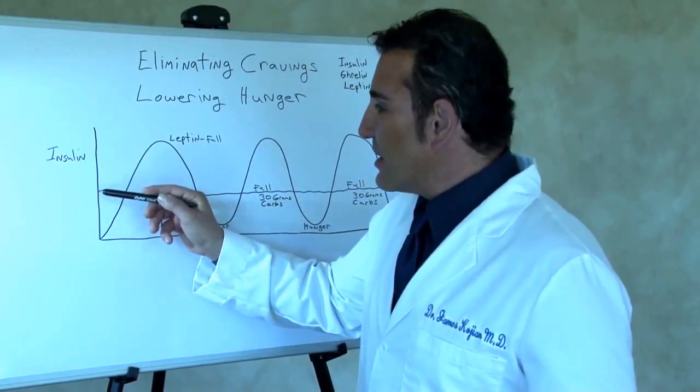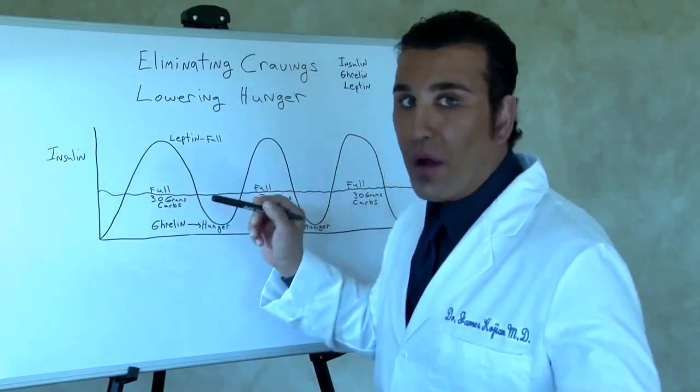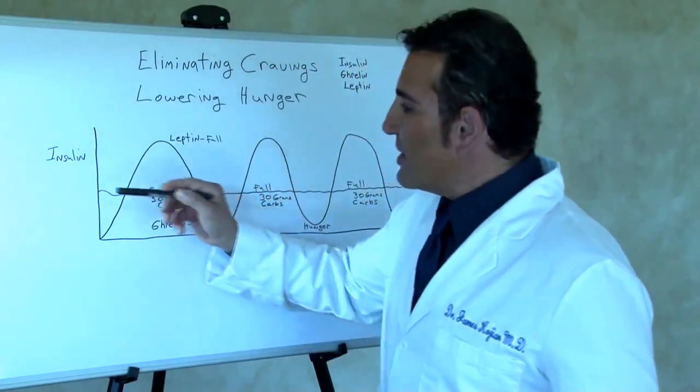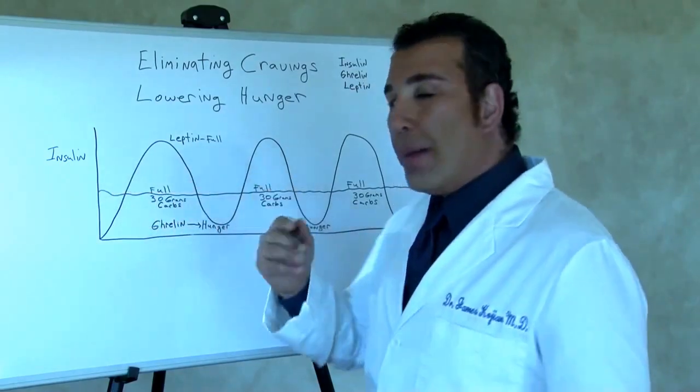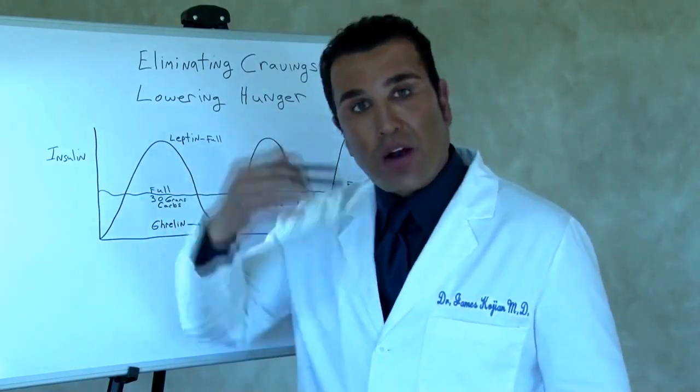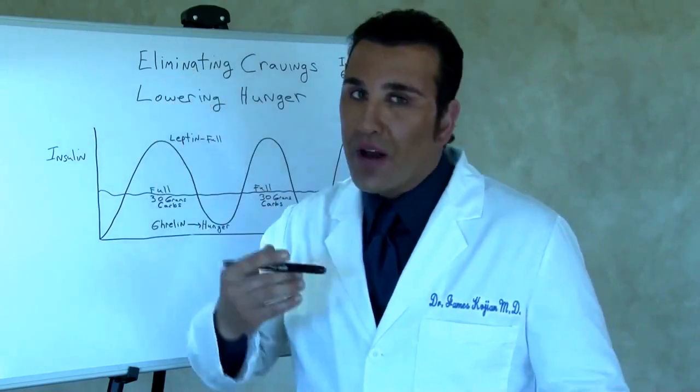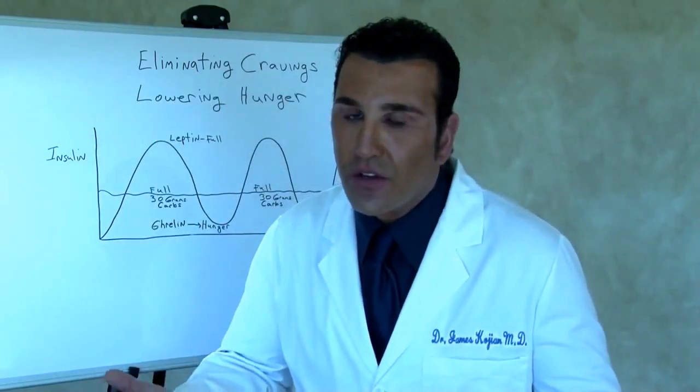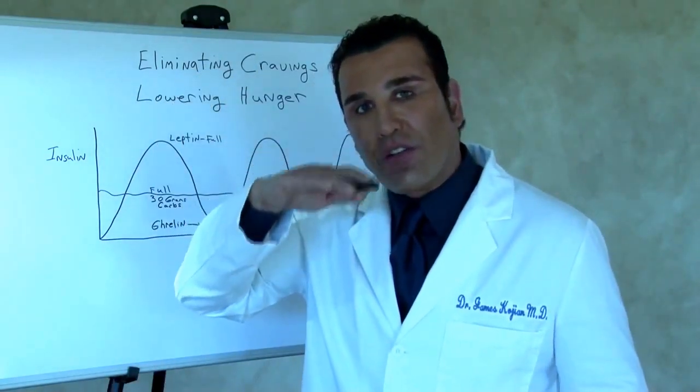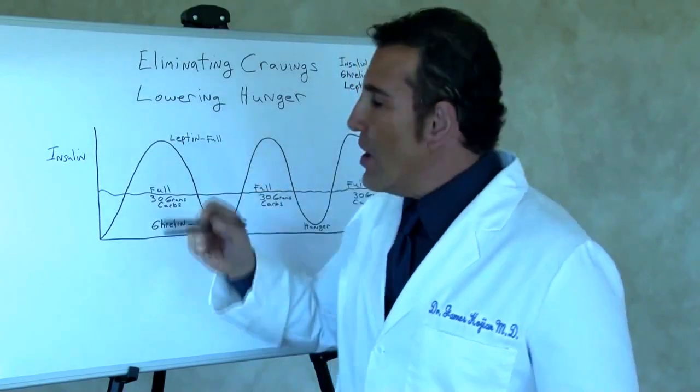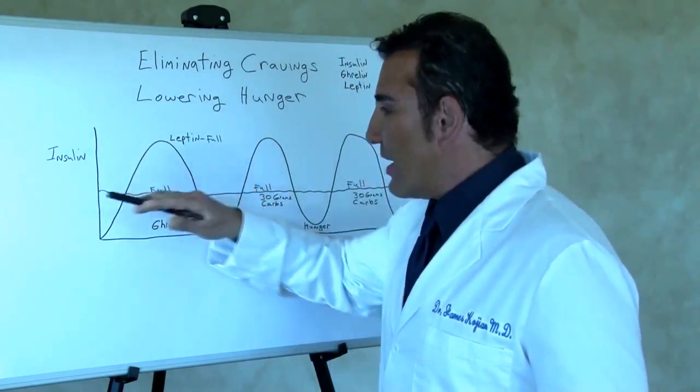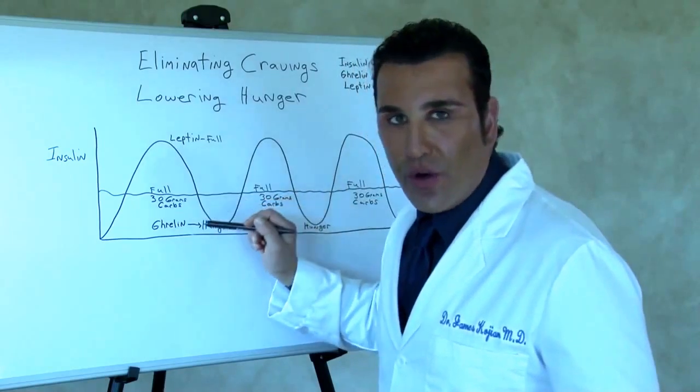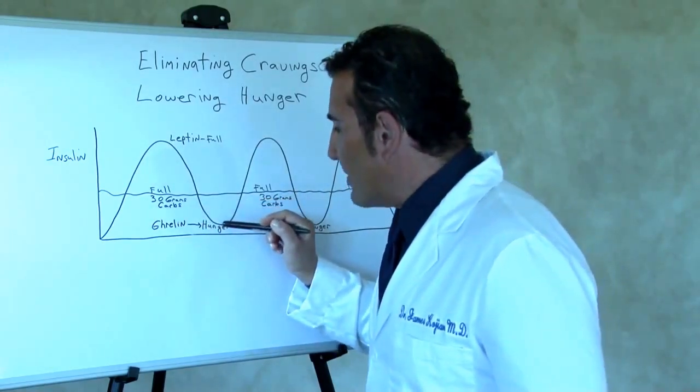The way to eliminate and decrease ghrelin and your hunger is to eat a meal that's low in carbs, that's high in protein, that causes the insulin to stay flat throughout the whole day. So when the insulin level is flat because you haven't had a high carbohydrate meal, your body doesn't need to secrete a lot of insulin, so the insulin level stays flat, it stays low.